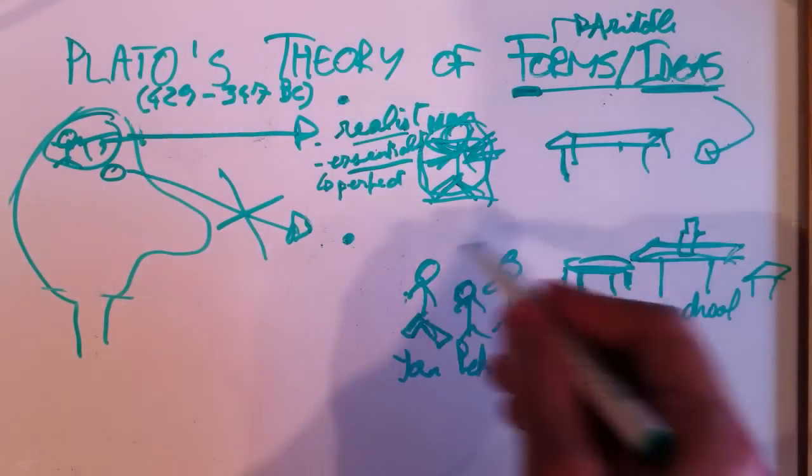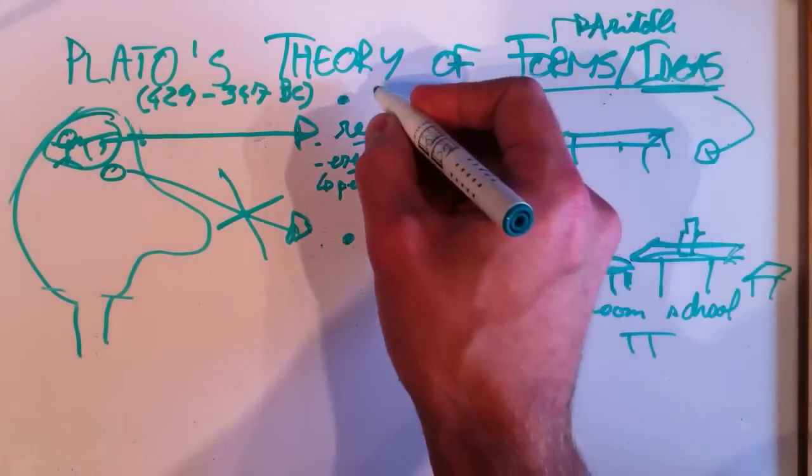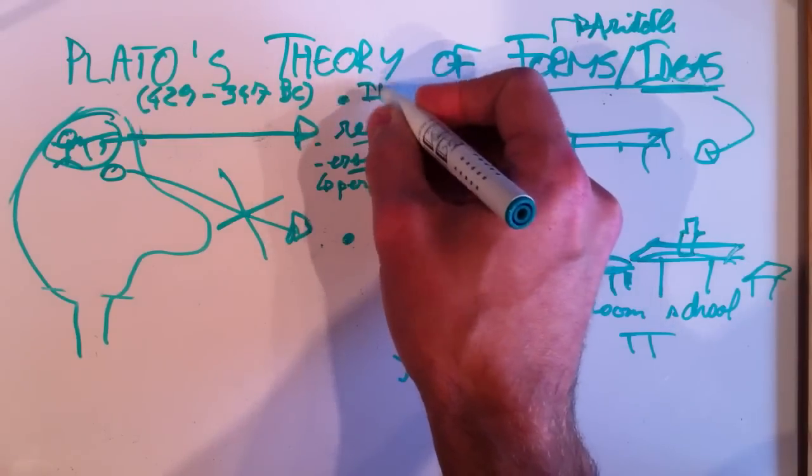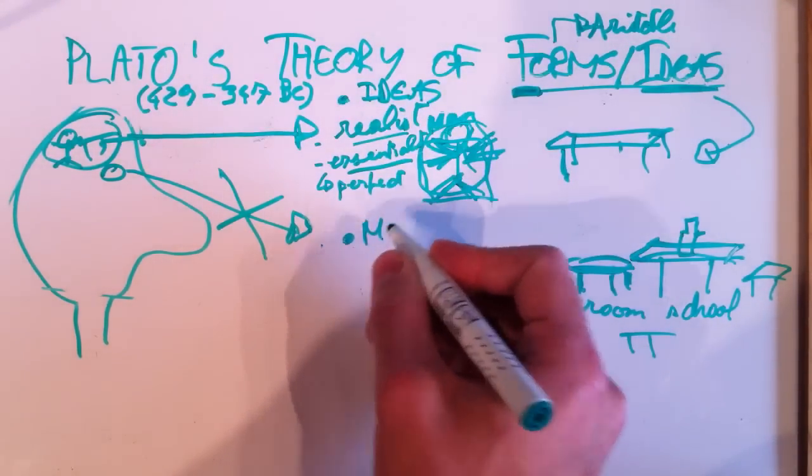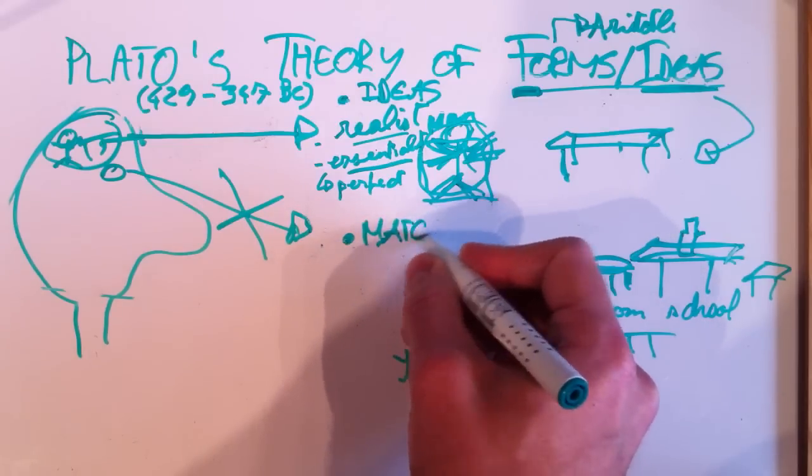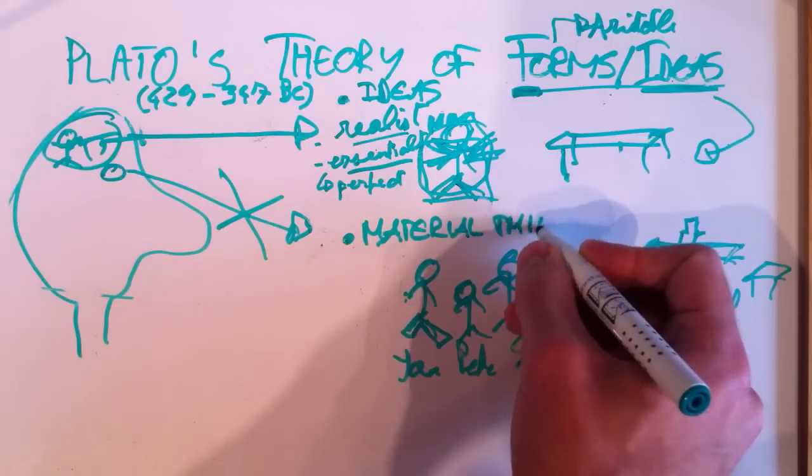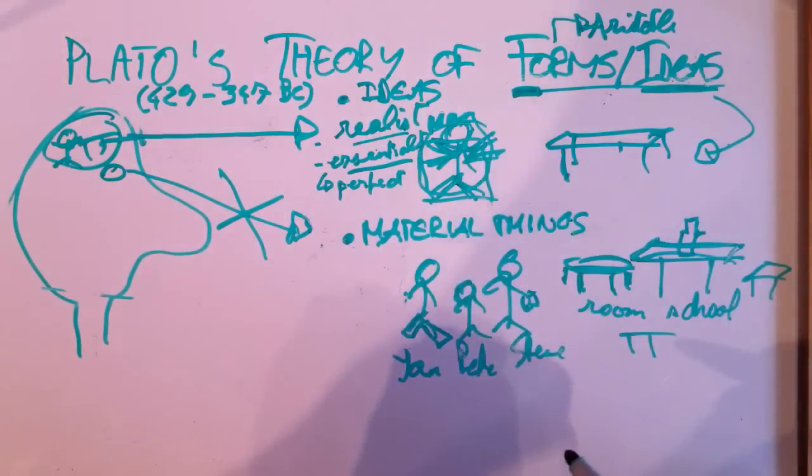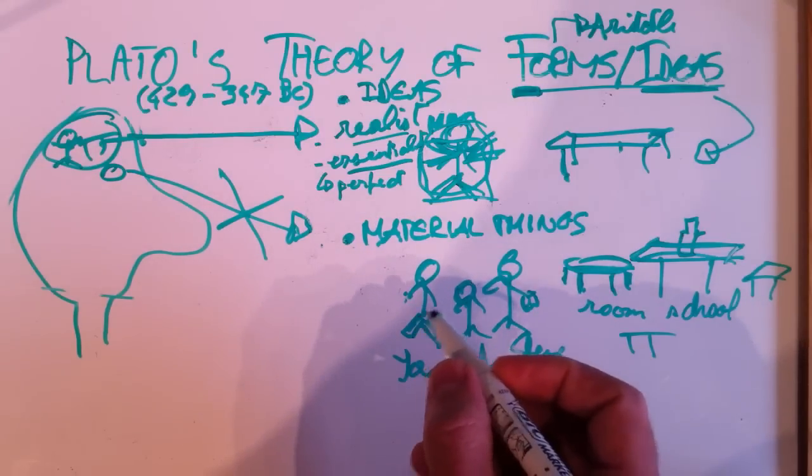So, that means that material things, and the distinction with Plato is thus one of ideas and material things. This means that material things are imperfect.